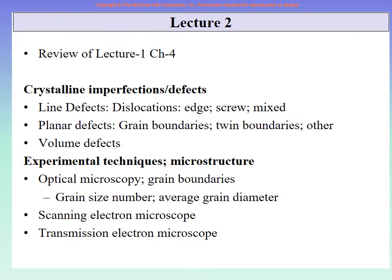As usual, we will initially review what we covered in lecture one of chapter four. Today we will continue with crystalline imperfections or defects — line defects, which include dislocations of edge, screw, and mixed types; planar defects, which include grain boundaries, twin boundaries, and some other defects; and volume defects. After that, we start another major topic: experimental techniques including microstructure.